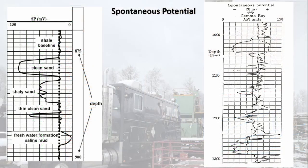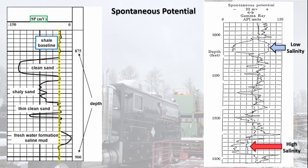Spontaneous potential logs report the electric potential within the borehole in millivolts. A shale baseline must be set to reflect the typical response for impermeable shale within the formation. Once established, all measurements are relative to the baseline. SP logs respond similar to gamma ray logs, although freshwater environments contribute to a positive result and high salinity water pushes towards negative. Therefore, combining the two readings is very useful for identifying the salinity of the formation fluid.